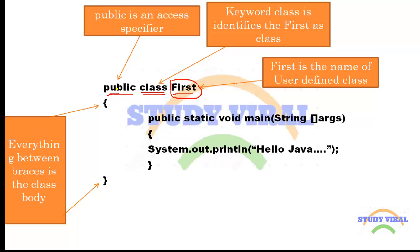In every Java source file there should be only a single public class. If you are writing two or three classes within a single source file, then only one of them should be public — you cannot make every class public. You can have multiple classes within a source file, but only a single class should be public. 'public' is an access specifier, and in Java there are four types of access specifiers: private, protected, public, and default.